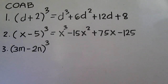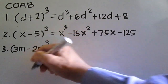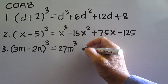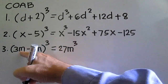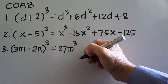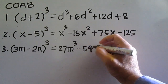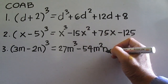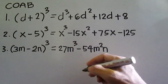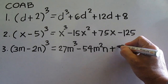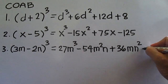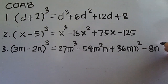The cube of the quantity 3m minus 2n is equal to the cube of the first term: 3m times 3m times 3m is 27m cubed. Thrice the product of the square of 3m and negative 2n: 3m times 3m is 9m squared, times 3 is 27m squared, times negative 2n is negative 54m squared n. Thrice the product of 3m and the square of negative 2n: negative 2n times negative 2n is 4n squared, times 9m is plus 36mn squared. Then cube of negative 2n is negative 8n cubed, so minus 8n cubed.